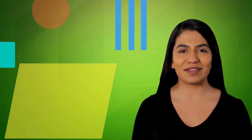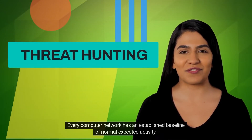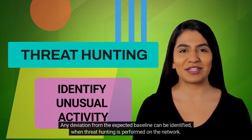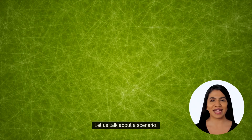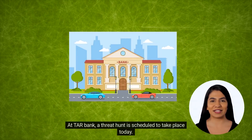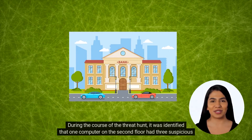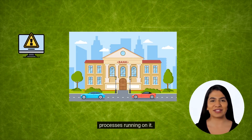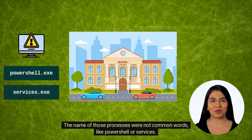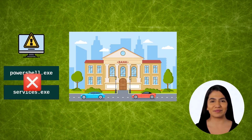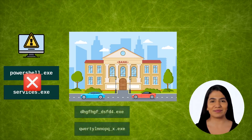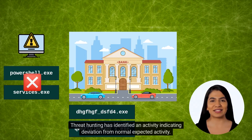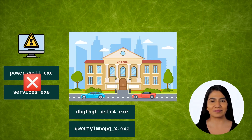Let's start with threat hunting. Every computer network has an established baseline of normal expected activity. Any deviation from the expected baseline can be identified when threat hunting is performed on the network. At Tar Bank, a threat hunt is scheduled to take place today. During the course of the threat hunt, it was identified that one computer on the second floor had three suspicious processes running on it. The names of those processes were not common words, like PowerShell or services — the process names had random characters in them. The cyber team decided to raise the alarm on this finding. Threat hunting has identified an activity indicating deviation from normal expected activity. It calls for investigation.